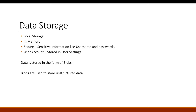The types of data storage within Akavache are: local storage, in-memory, secure, and user account. Local storage is stored in a SQLite database. In-memory data lasts only for the application instance — if you close the app, the data is lost. Secure storage is used to store usernames and passwords. User account is stored in user settings. All data in Akavache is stored in the form of blobs — binary objects — used to store unstructured data.